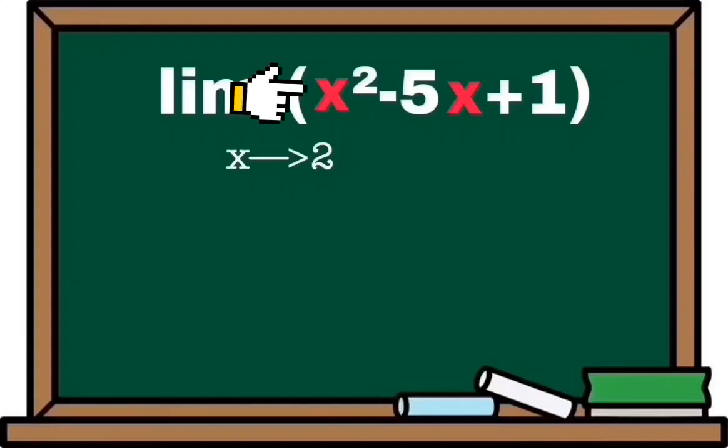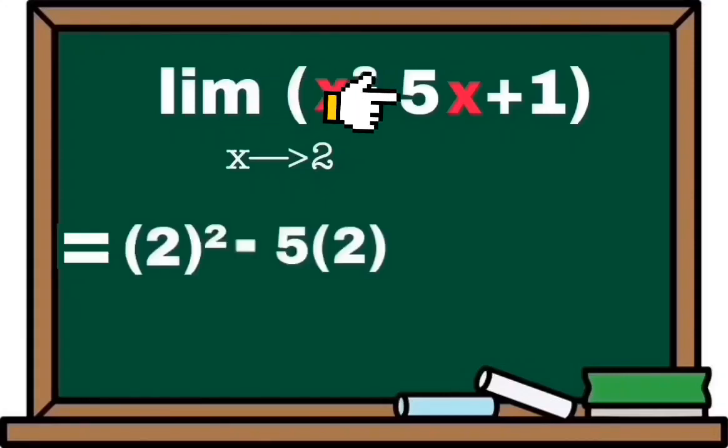So, x squared will become 2 raised to 2 minus 5 times 2 plus 1.